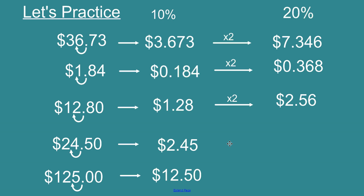Here 20% of $12.80 is twice as much as $1.28 which is $2.56. And 20% of $24.50 we just multiply that 10% times 2 and we get $4.90. And again for our last one 20% of $125 we take 10% which is $12.50 times 2 and we get $25.